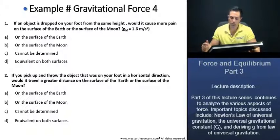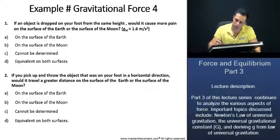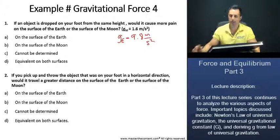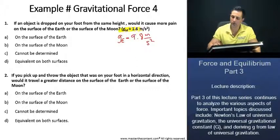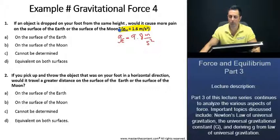Example, gravitational force 4. If an object is dropped on your foot from the same height, would it cause more pain on the surface of the Earth or the surface of the Moon? The acceleration due to gravity on Earth is 9.8 meters per second squared. The acceleration due to gravity on the Moon is 1.6 meters per second squared. That's roughly one-sixth of what the downward acceleration is on Earth.